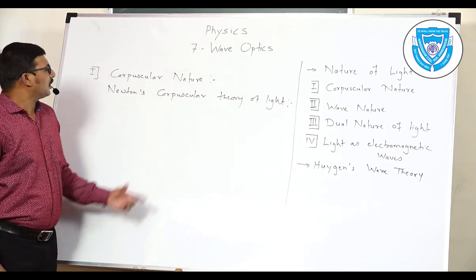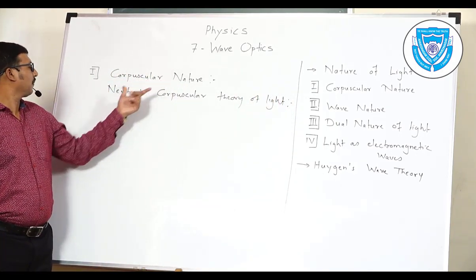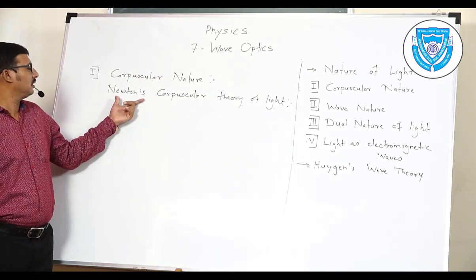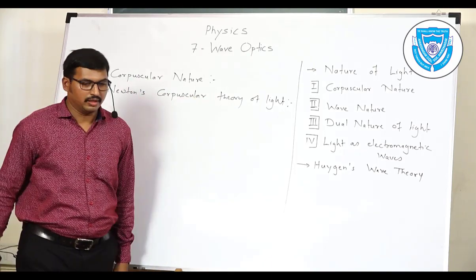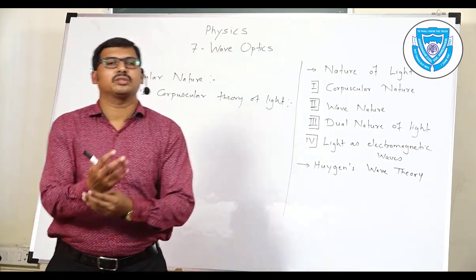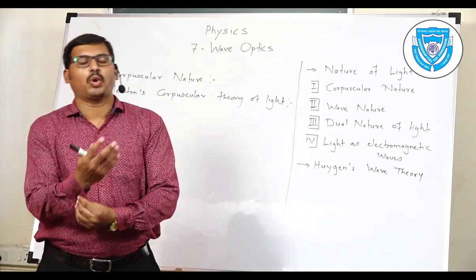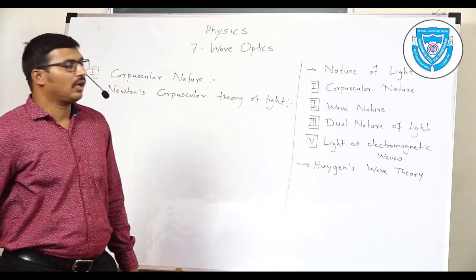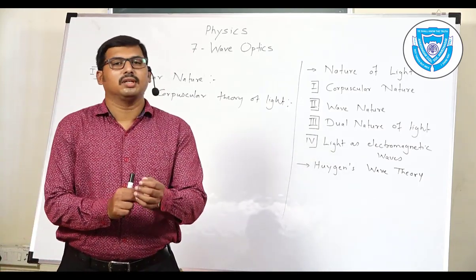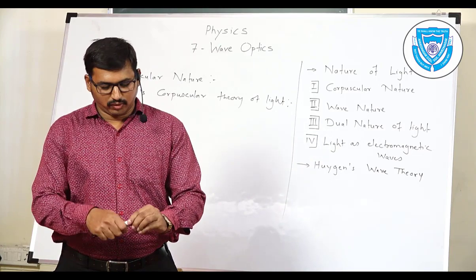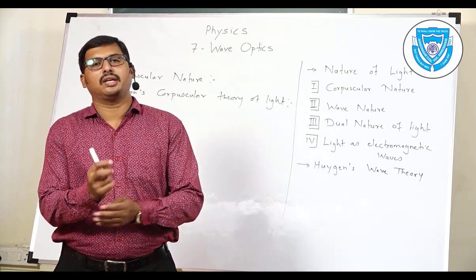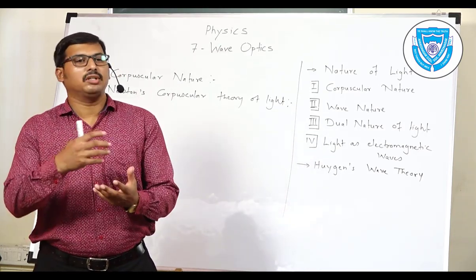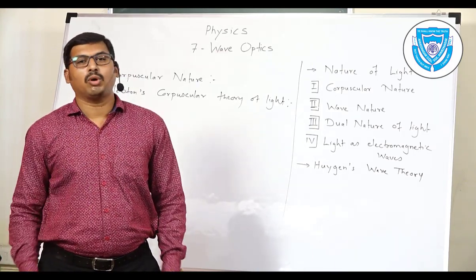In corpuscular nature, Newton proposed Newton's corpuscular theory of light. In that theory we have the following points. We will see one by one what predictions are given by Newton in his theory. The very first point: Newton says that a light source emits light in the form of particles.